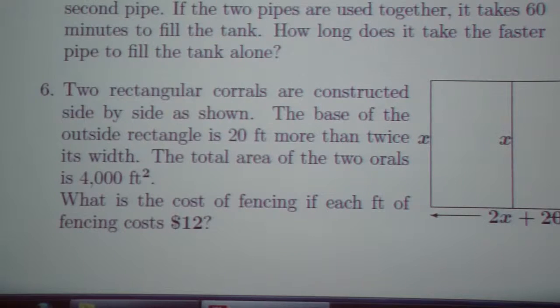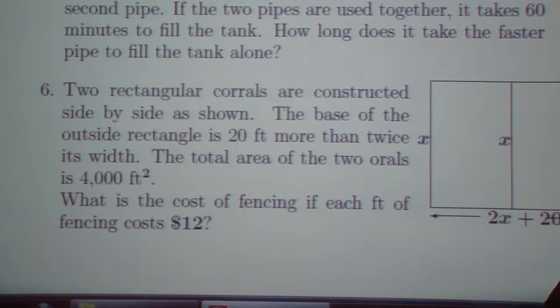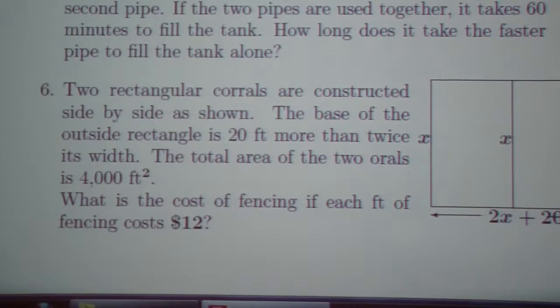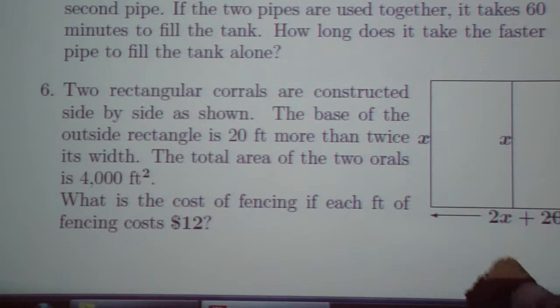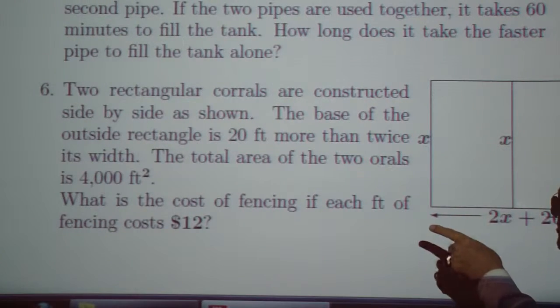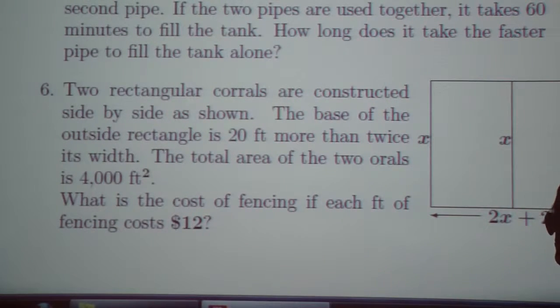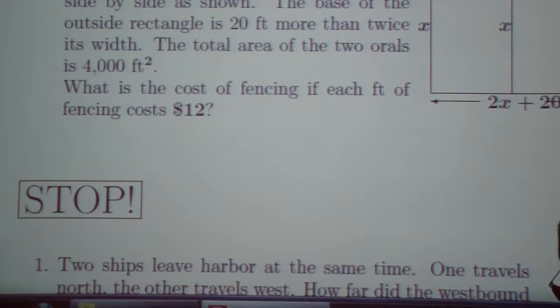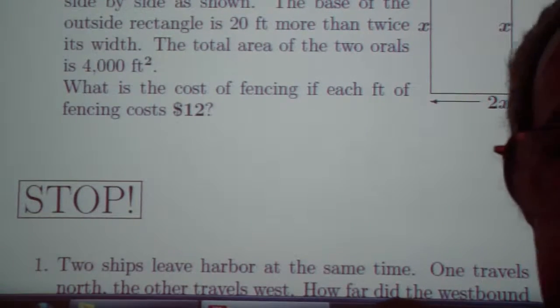And finally, two rectangular corrals are constructed side by side as shown. The base of the outside rectangle is 20 feet more than twice the width. The total area of the two corrals, again there's a seam missing, is 4,000 square feet. What is the cost of fencing if each foot of fencing costs $12?